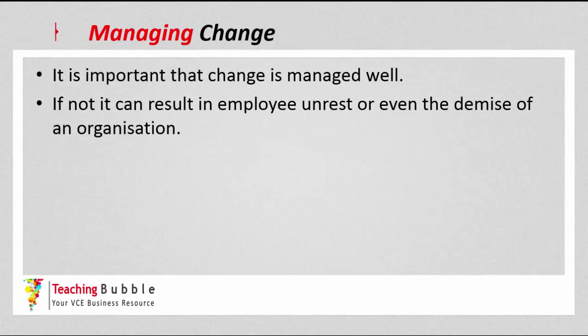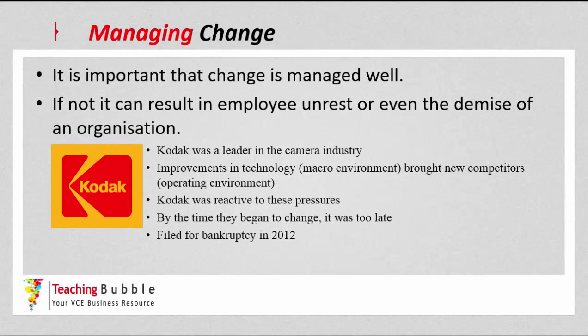Poor change management can also be the demise of an organisation. Take Kodak — a leader in the camera industry that actually created digital camera technology themselves but didn't take it commercial. Improvements in technology brought in new competitors, and improvements in phone cameras compounded that. Kodak was really reactive to those pressures; people would argue they got complacent and still thought they were a powerhouse in the industry. By the time they began to realise they really needed to change, it was too late, and as a result they filed for bankruptcy in 2012. Managing change is really important, and so is the importance of being proactive rather than reactive.